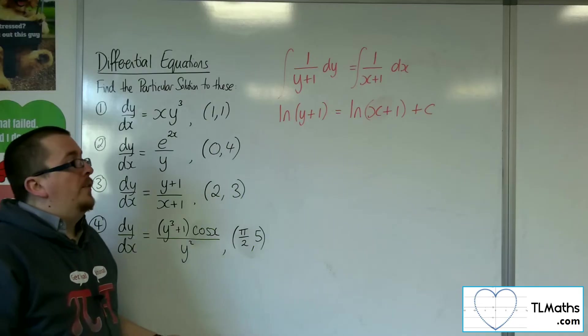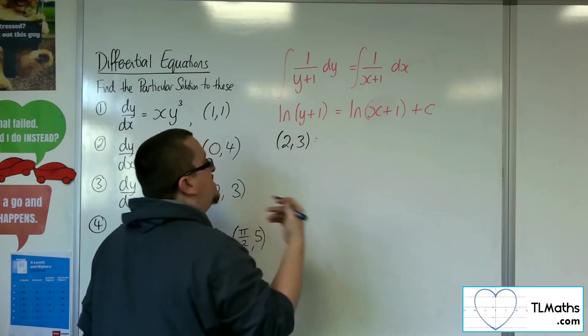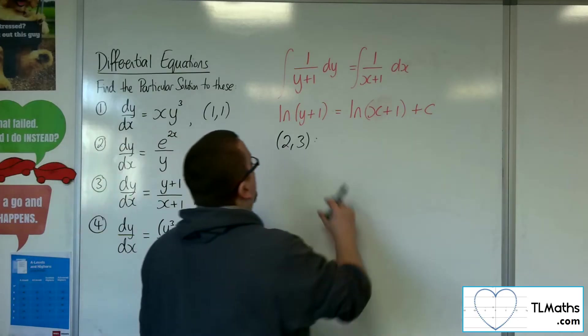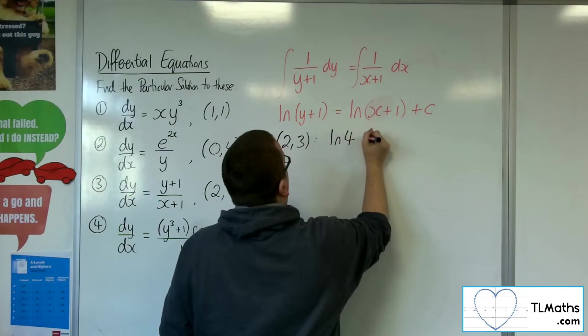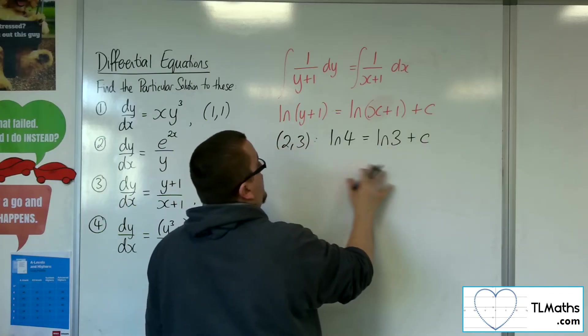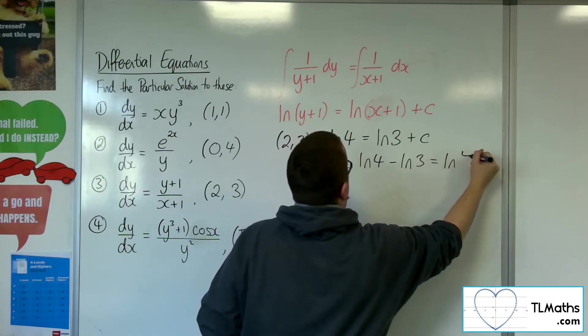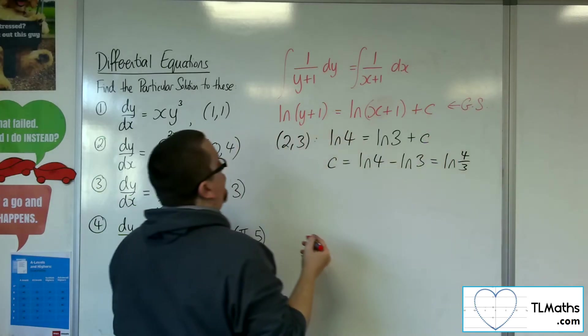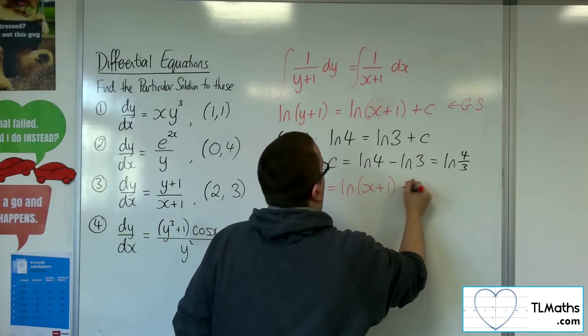I'd probably leave that there. I wouldn't bother simplifying it. Let's substitute in the 2, 3. This choice about whether to simplify it or not really depends on what the question is asking. Is the question asking me to put it into a particular format or not? So substituting in 2, 3, I'm going to get log of 3 plus 1, so log of 4, is equal to log of 2 plus 1, so log of 3, plus c. I know from that, that c would be log of 4, take away log of 3, which is log of 4 thirds. So whereas that was the general solution, we've got log of y plus 1 equals log of x plus 1 plus log of 4 thirds.